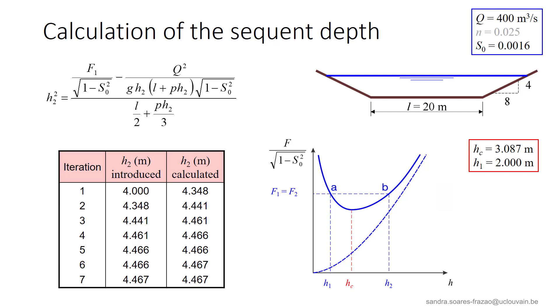We start from an initial depth, for example, h2 equals 4 meters, that is above hc. The table indicates the iterations that progressively converge towards a depth of 4.467 meters.